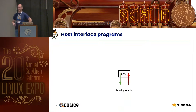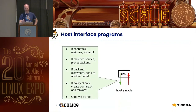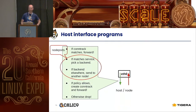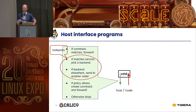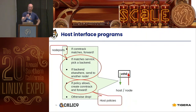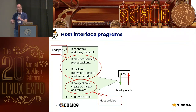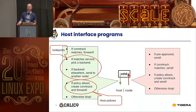Then we have the host network interfaces — the physical interfaces that connect your node to the outside world. Similar to pods, we match against conntrack and resolve services because we may have external traffic hitting node ports. If something is hitting a node port, we have to decide whether the packet stays on this node and gets delivered to a local pod, or whether it needs to be forwarded to a different node. We also run host endpoint policies — an extension on top of the Kubernetes policy model offered by Calico's Global Policies — so you can police what comes into your node, not just what comes into your pods.